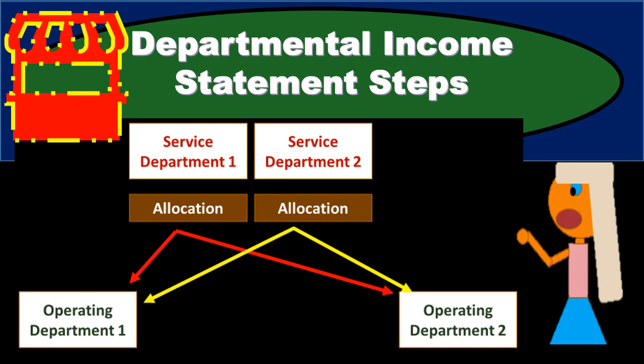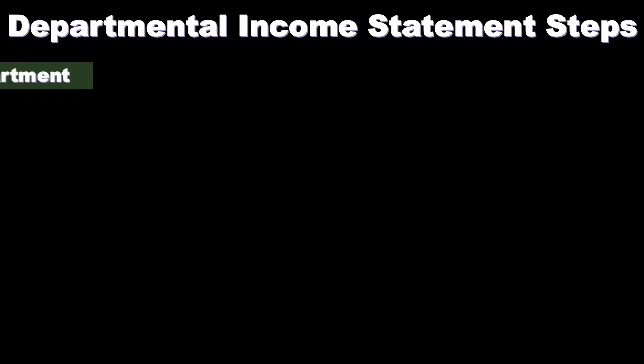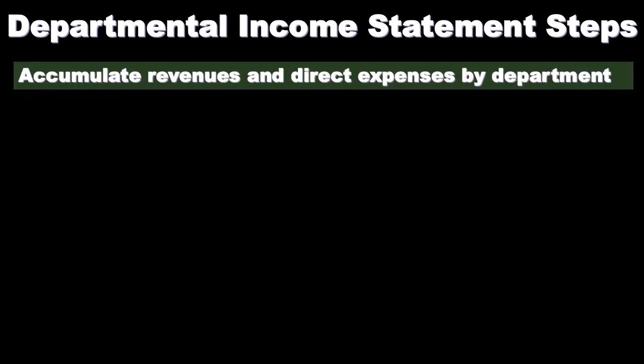In this presentation we will go through the process and steps for the creation of a departmental income statement. First we'll list the steps and then we'll go into some more detail about them. So this is going to be the departmental income statement steps. Number one: accumulate revenue and direct expenses by department.